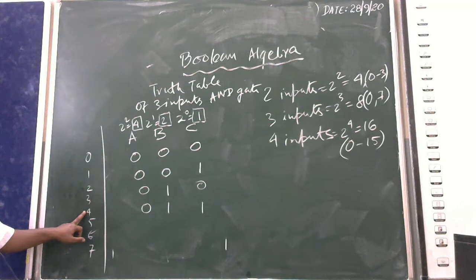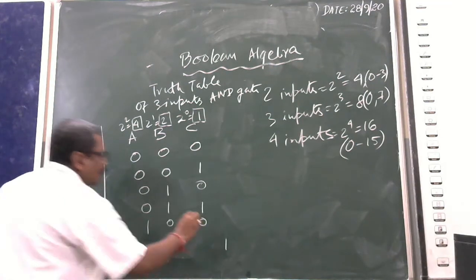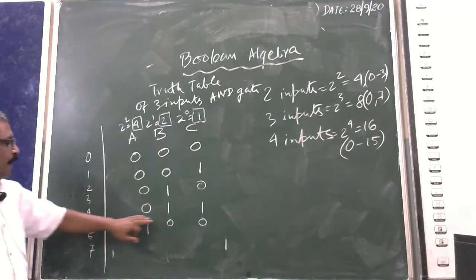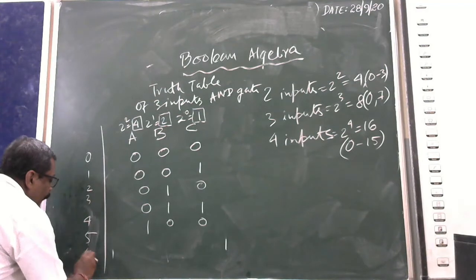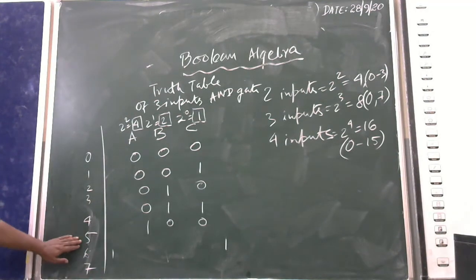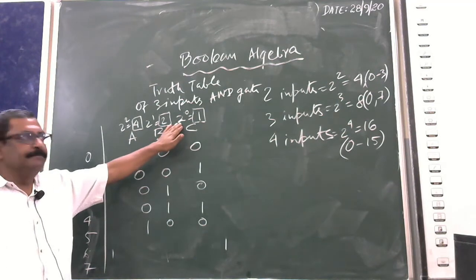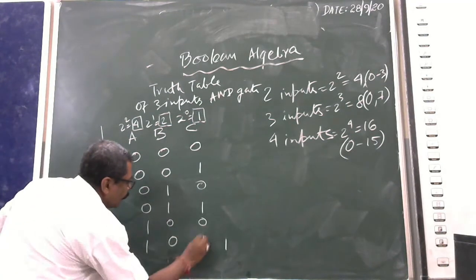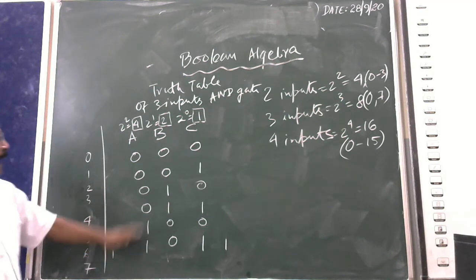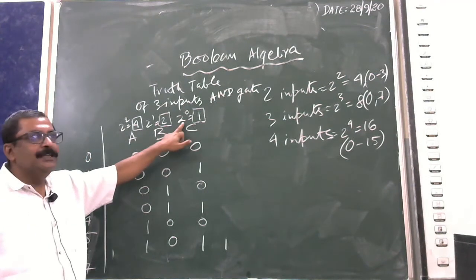For value 4, it corresponds to 2 to the power 2, so A is ON — giving 1, 0, 0. For value 5: there is no 5 as a power of 2, so we calculate 4 + 1 = 5, meaning A and C are ON — giving 1, 0, 1.